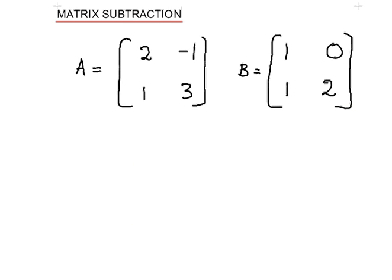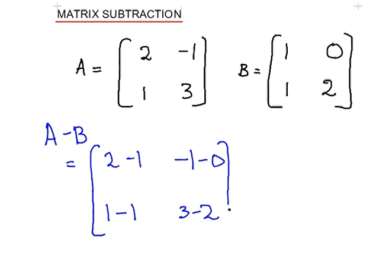Now let's look at matrix subtraction. So we're going to calculate A minus B. For each corresponding pair of elements, we perform a subtraction. So 2 minus 1, minus 1 minus 0, 1 minus 1, and 3 minus 2. And we get 1, minus 1, 0, and 1.